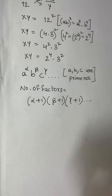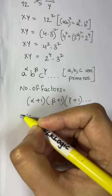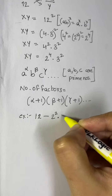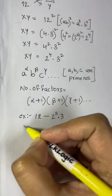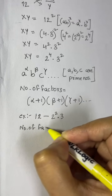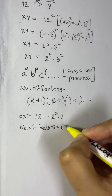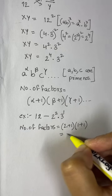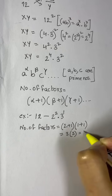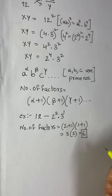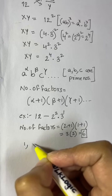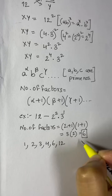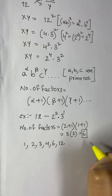For example, let's take 12. We can write 12 = 2² × 3¹. Applying the rule, the number of factors equals (2+1) × (1+1) = 3 × 2 = 6. So 12 has 6 factors.